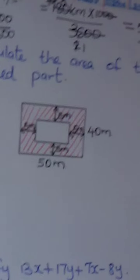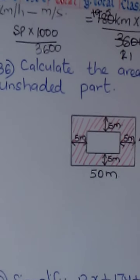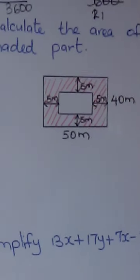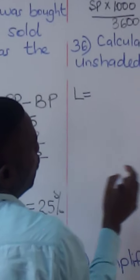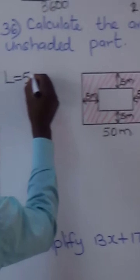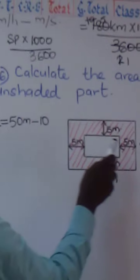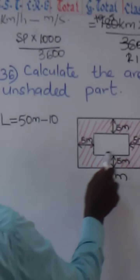The next question is number 36: calculate the area of the unshaded part. The unshaded part is the internal — the inside rectangle. It doesn't have any measurements given, so we have to work out how to get those measurements. To get the length of the inner rectangle, we take the length of the bigger one — that is 50 meters — and subtract 10. That 10 comes from 5 on this side plus 5 on that side.